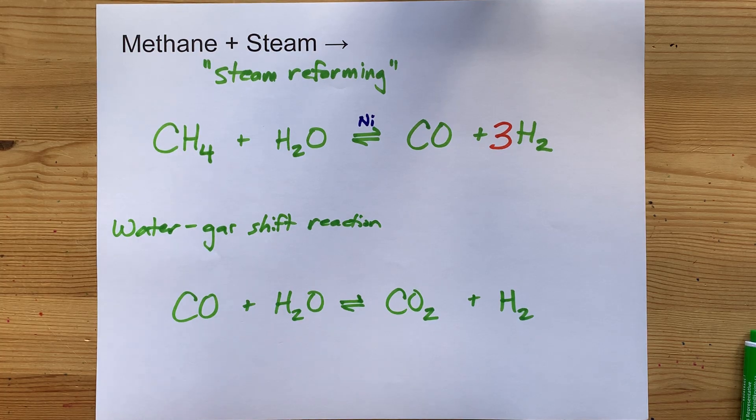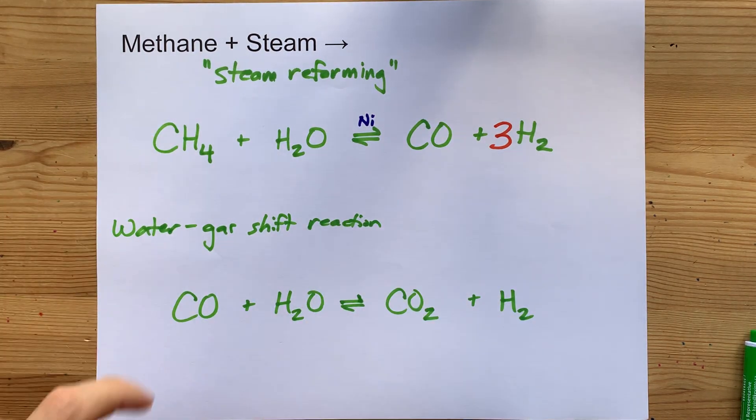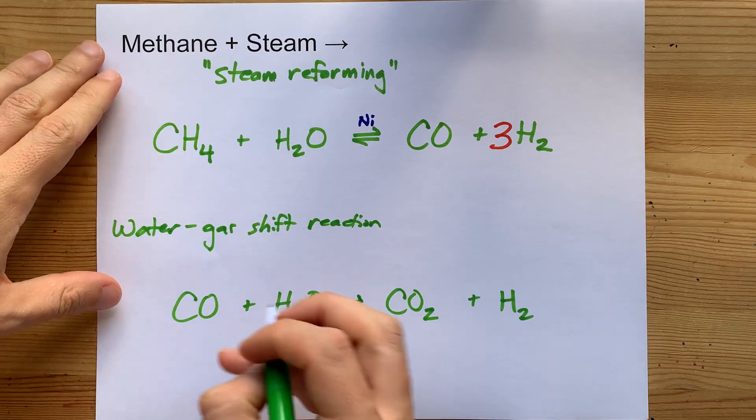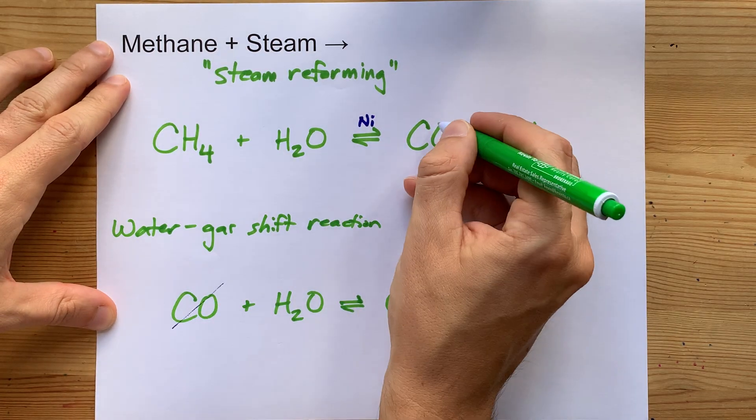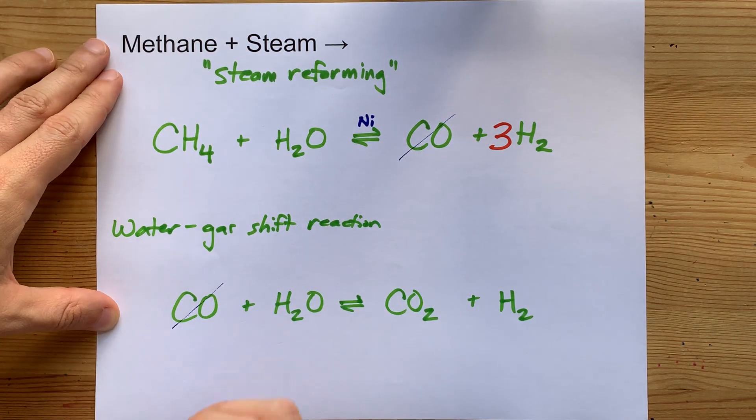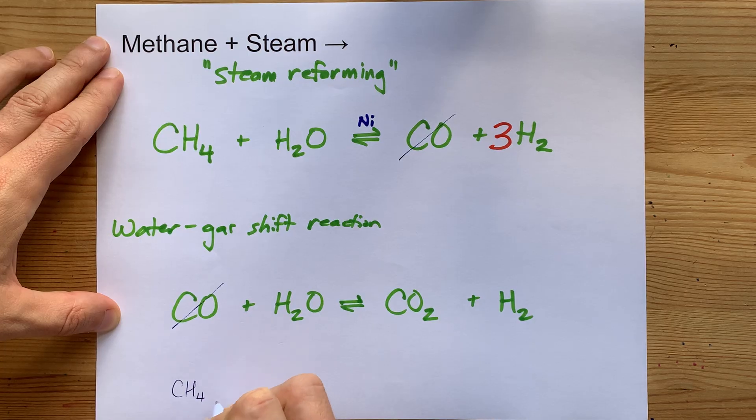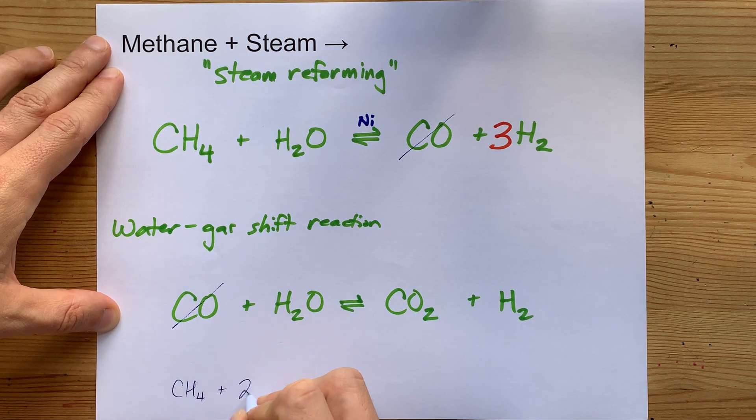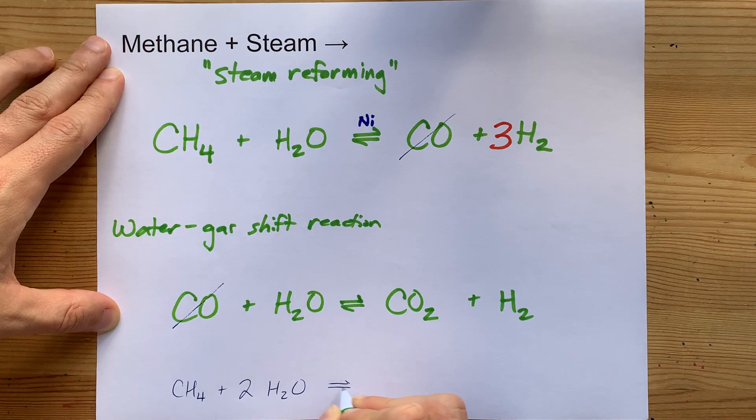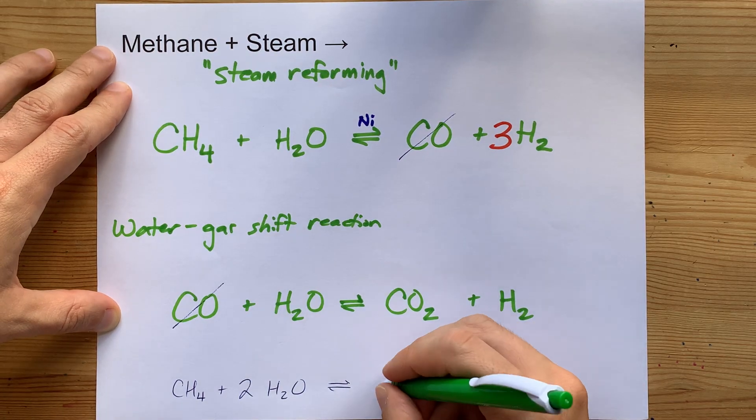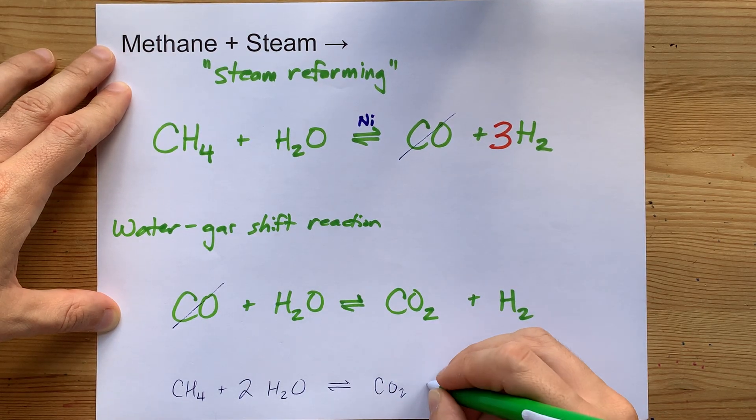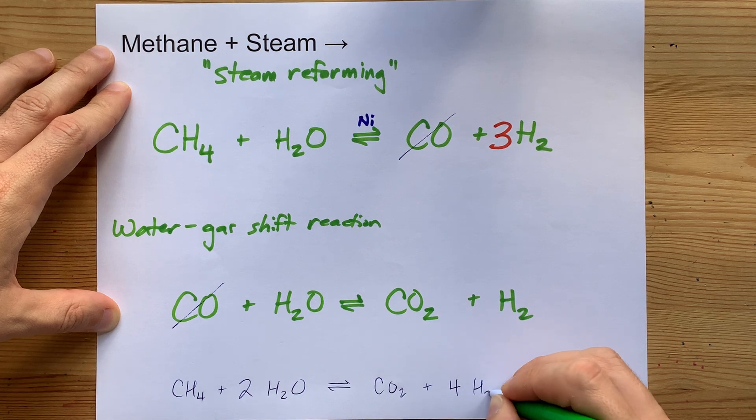What you'll notice is that if you add these two reactions together, the carbon monoxide cancels out as an intermediate, and you end up with CH4 reacting with two water molecules to eventually become a carbon dioxide and four hydrogens.